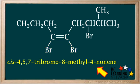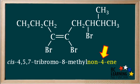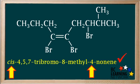So the correct name for this compound is cis-4,5,7-tribromo-8-methyl-4-nonene. An alternative method of expressing 4-nonene, found in some textbooks, is to write it as non-4-ene, which shows that the double bond depicted by the ene starts on carbon number four. Naming alkenes with this method is not required in Chemistry 11, but we just wanted to make you aware that this method exists. The original name, cis-4,5,7-tribromo-8-methyl-4-nonene, is perfectly acceptable.